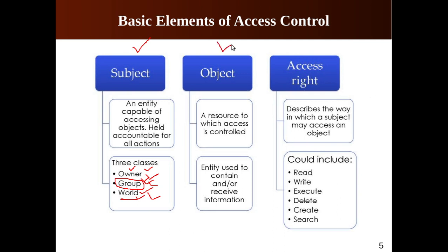An object is a resource to which access is controlled — an entity used to contain or receive information. It could be a file, a page of a document, a segment, a directory, a message, or a program. Some access control systems even consider bits, bytes, and words as objects. Access rights describe the way in which a subject may access an object.